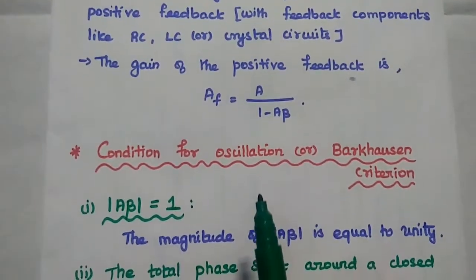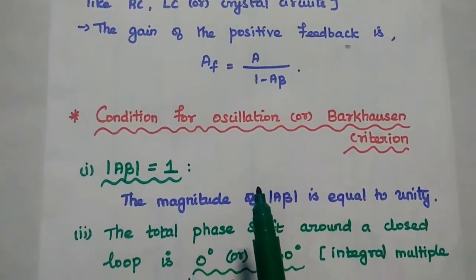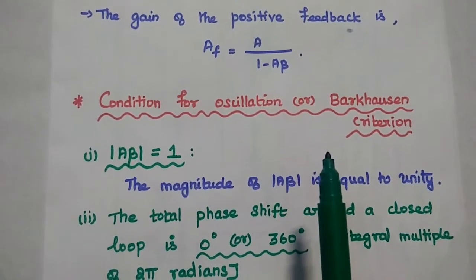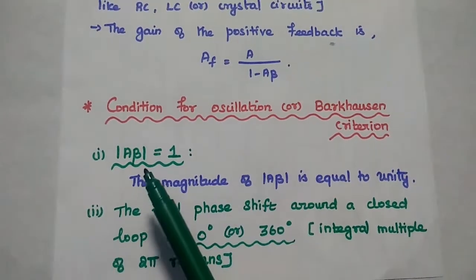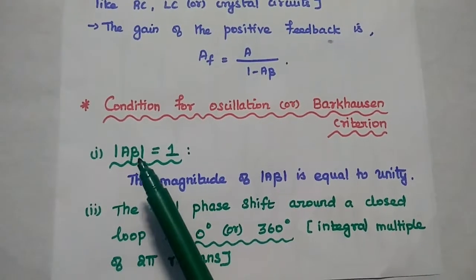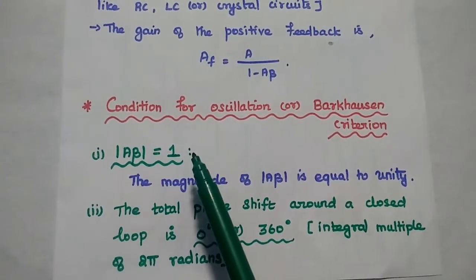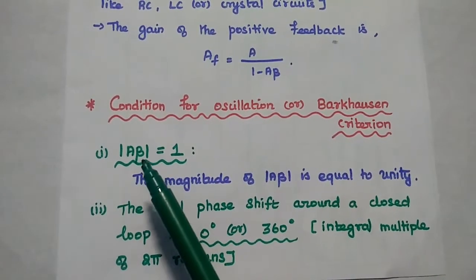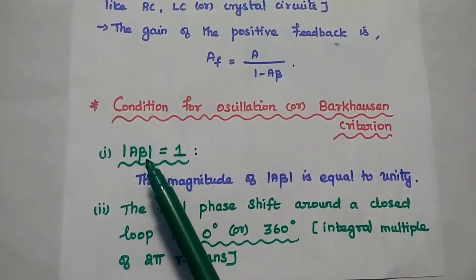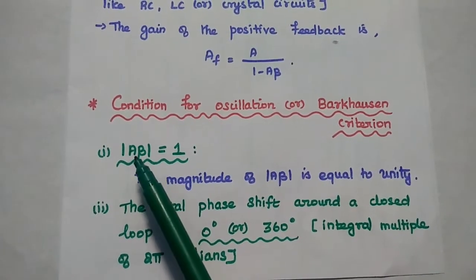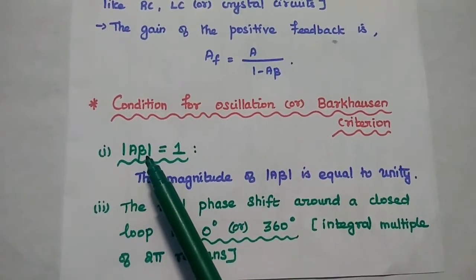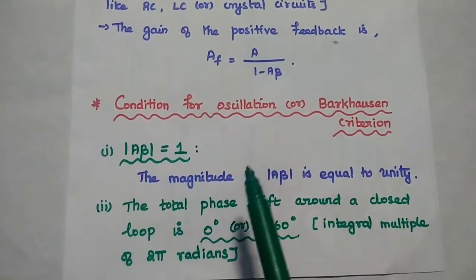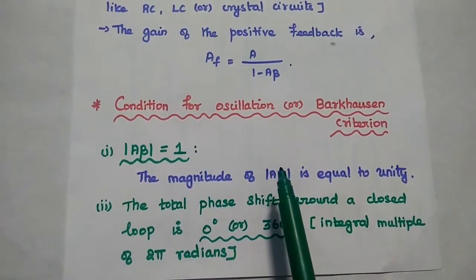So the next one is condition for oscillation or Barkhausen criterion. This is very, very important. There are two conditions. So the first one is the magnitude of A beta is equal to 1. So here A beta is nothing but the loop gain of the system. Loop gain means the product of amplifier gain and the feedback gain. So here the magnitude of A beta is equal to unity. That is the first condition.